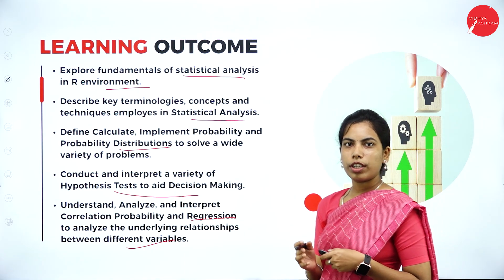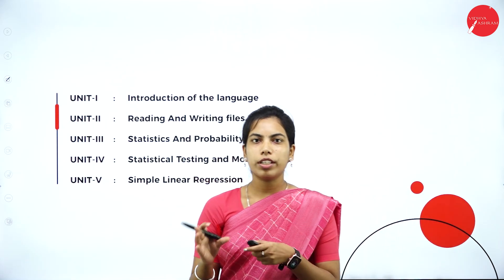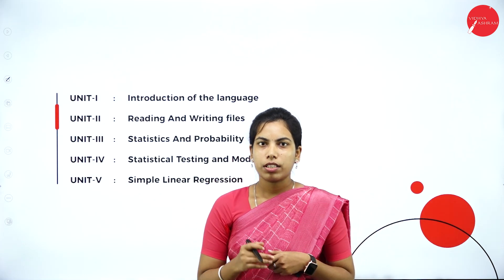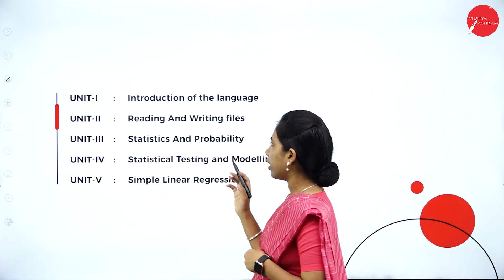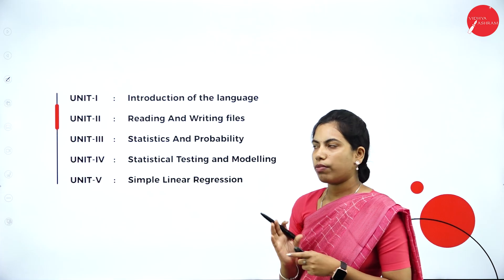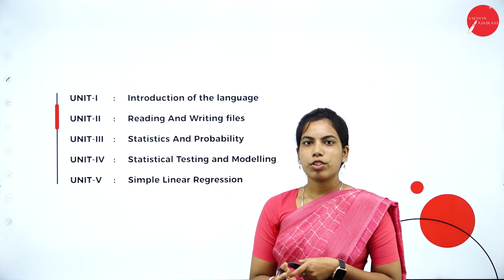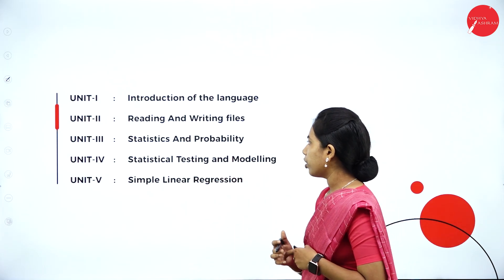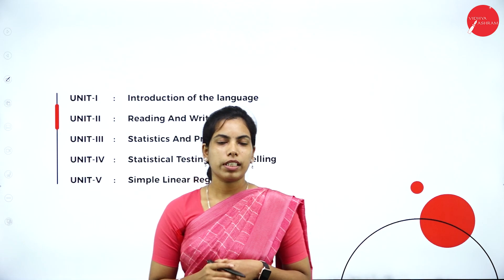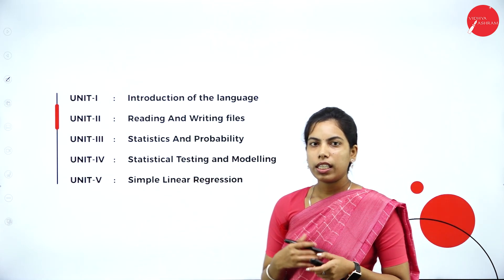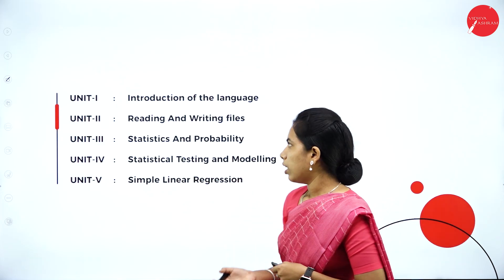Let's see the contents of each unit. Unit 1 contains an introduction to the language — every language has its own basics needed to understand operations. Unit 2 covers reading and writing files using specific functions. Unit 3 covers complete statistics and probability distributions including Poisson distribution, mass function, binomial, and more. Unit 4 covers statistical testing and modeling. The last unit, Unit 5, contains simple linear regression.